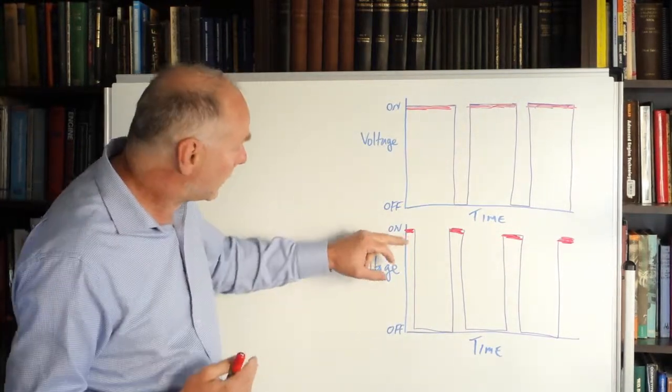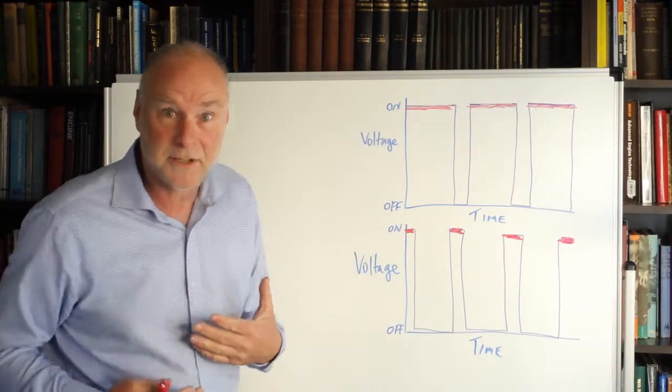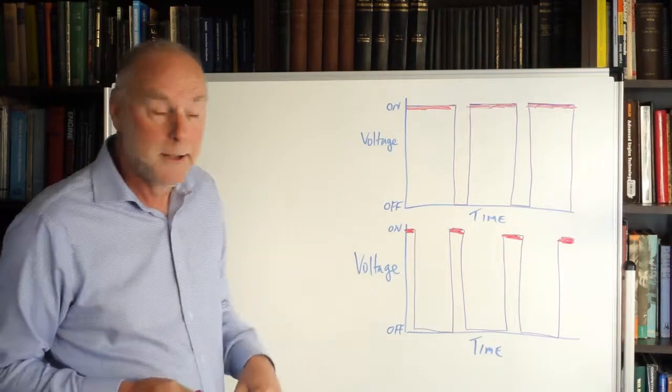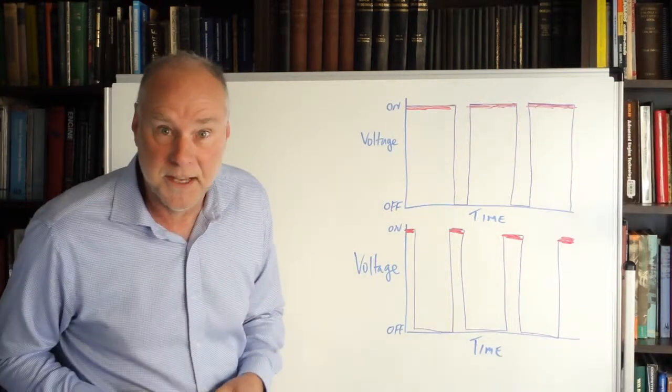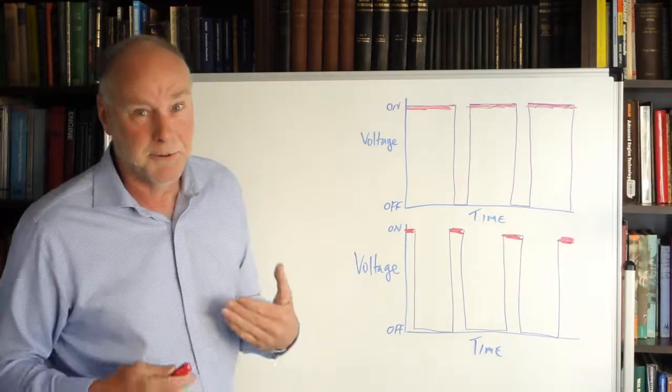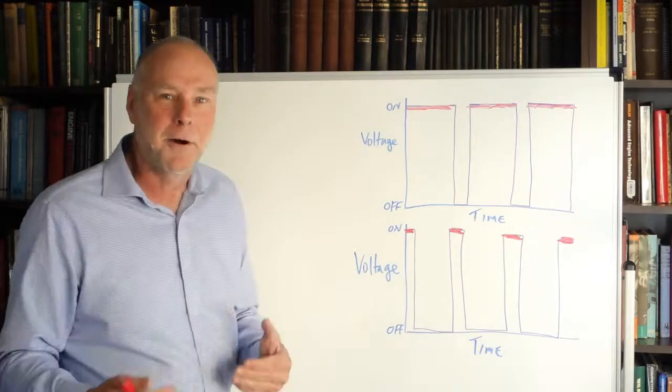So what we've got is on for only a short time, so the battery voltage, what the device actually sees, is going to be much lower. If the on time is only 10%, then it's only going to see 10% of battery voltage, and that's pretty low. Most pumps or fans would be stopped if they were seeing only 10% of battery voltage.